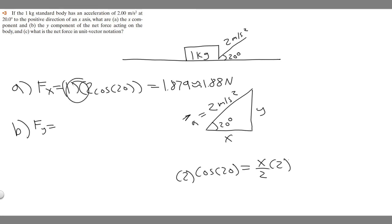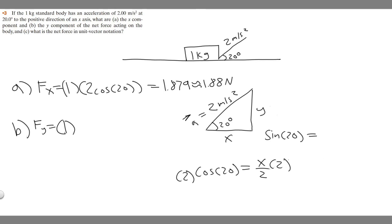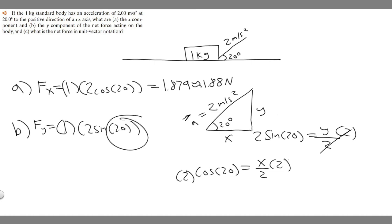Now let's do B. It's the same idea — force equals mass times acceleration, with mass equal to 1. Now we have to find the vertical component of acceleration. We take the sine of 20 degrees, which is opposite over hypotenuse, so sine of 20 equals y over 2. Solving for y: y equals 2 times the sine of 20. That gives us 0.684, which I'll round to 0.68 newtons.